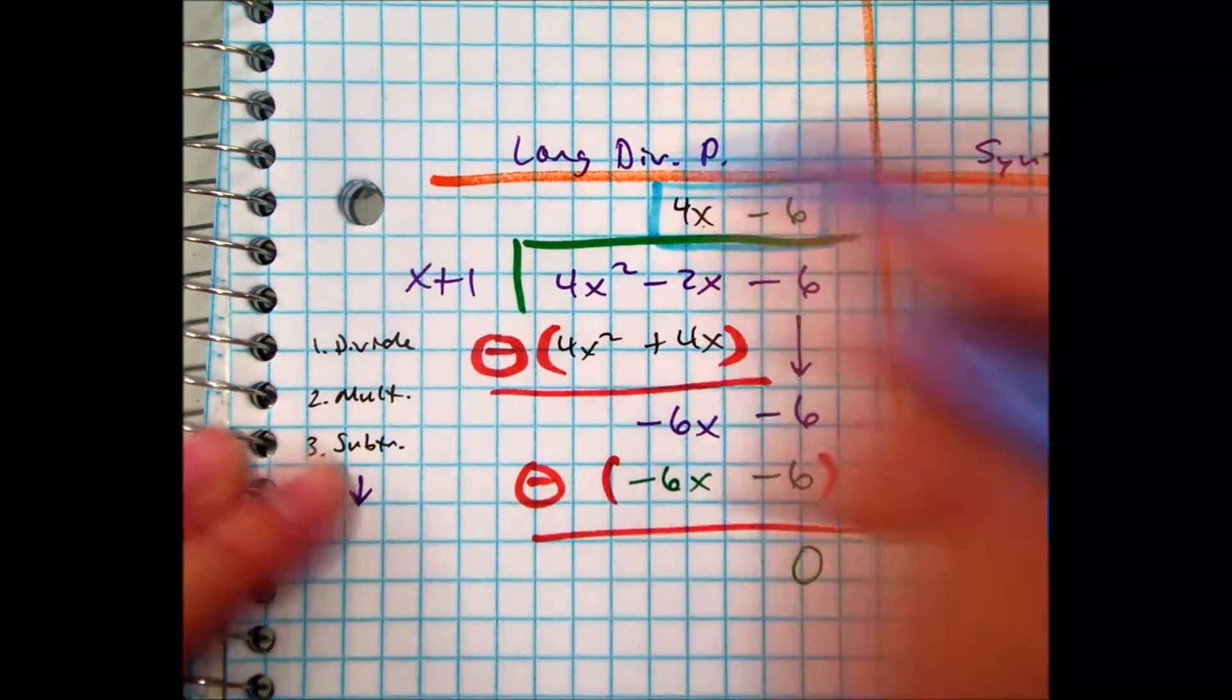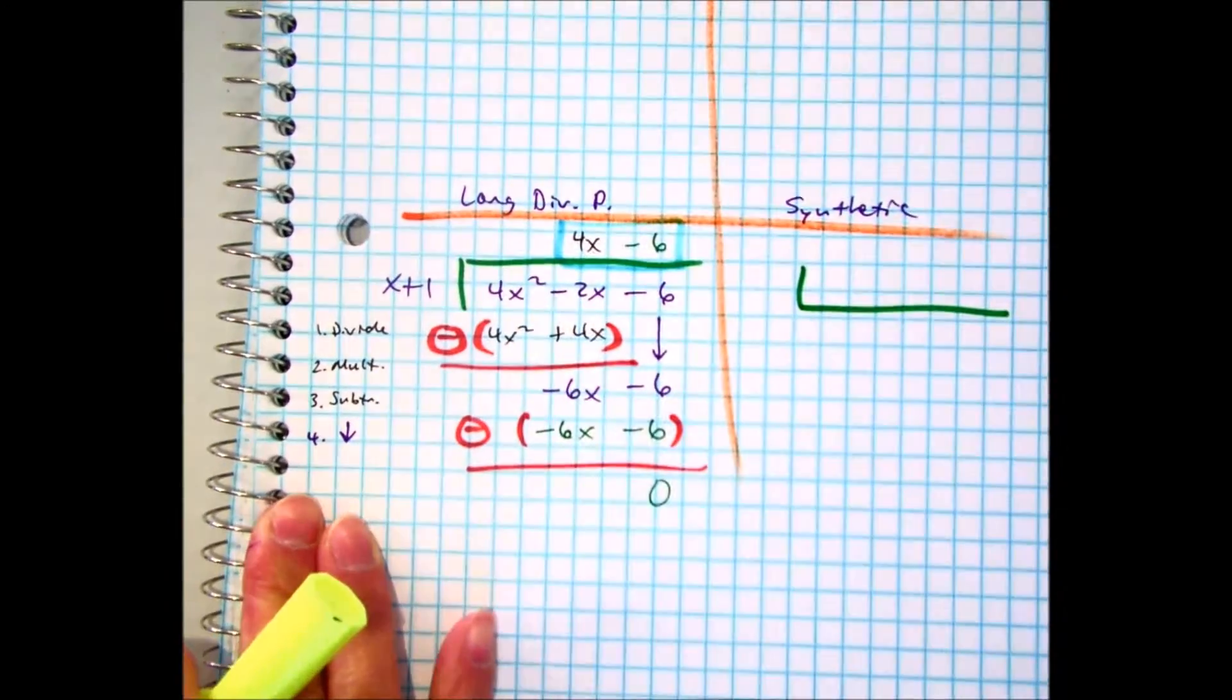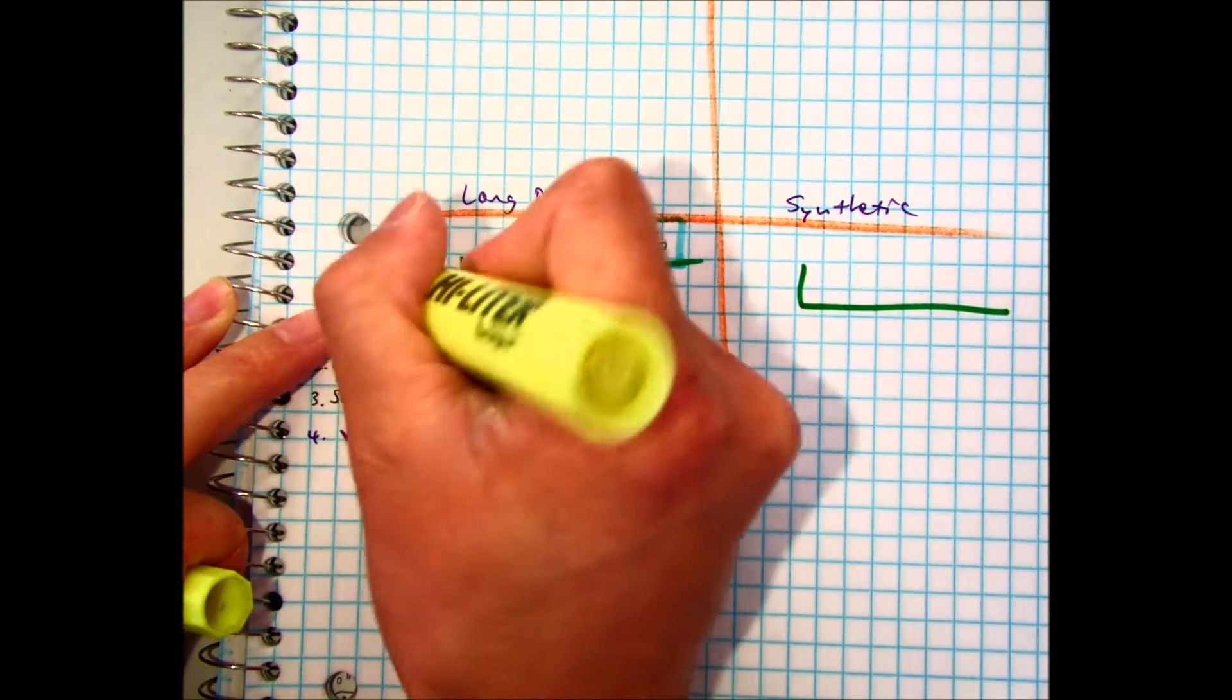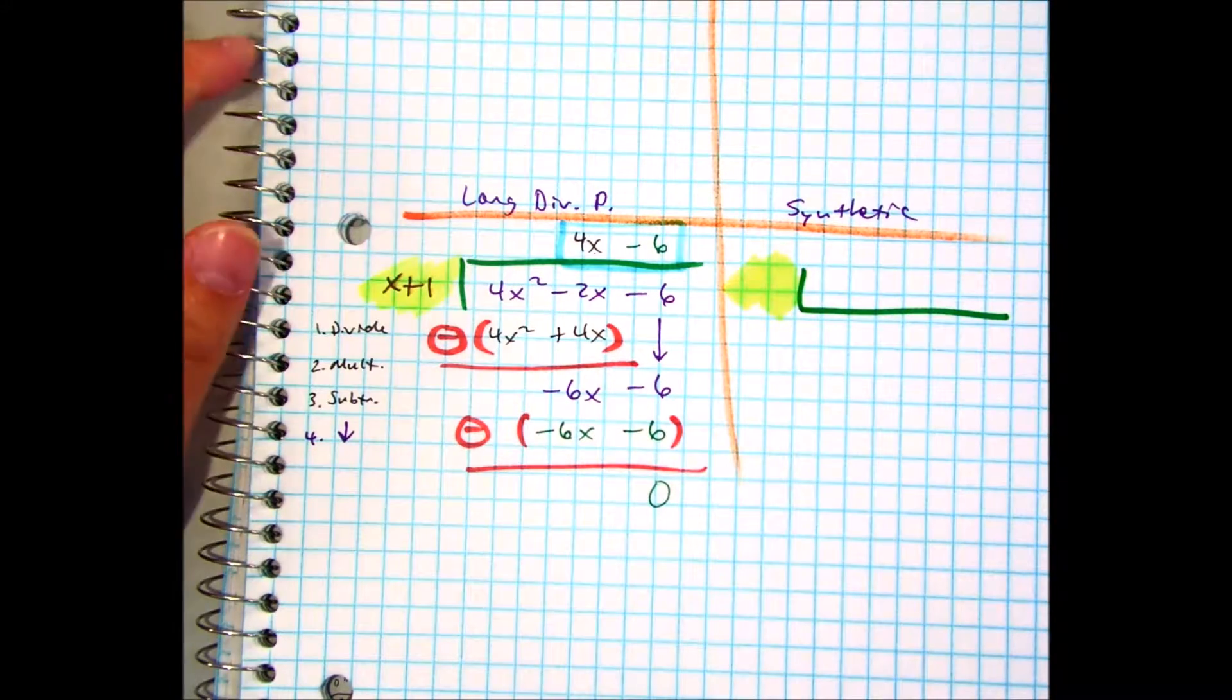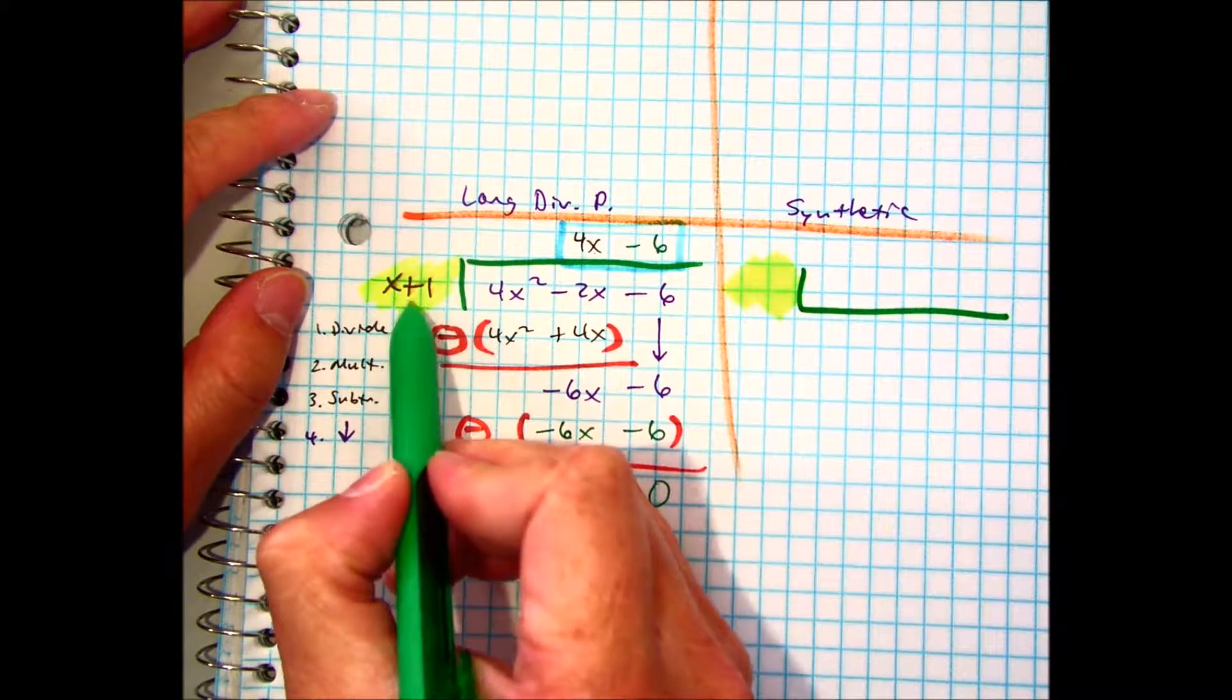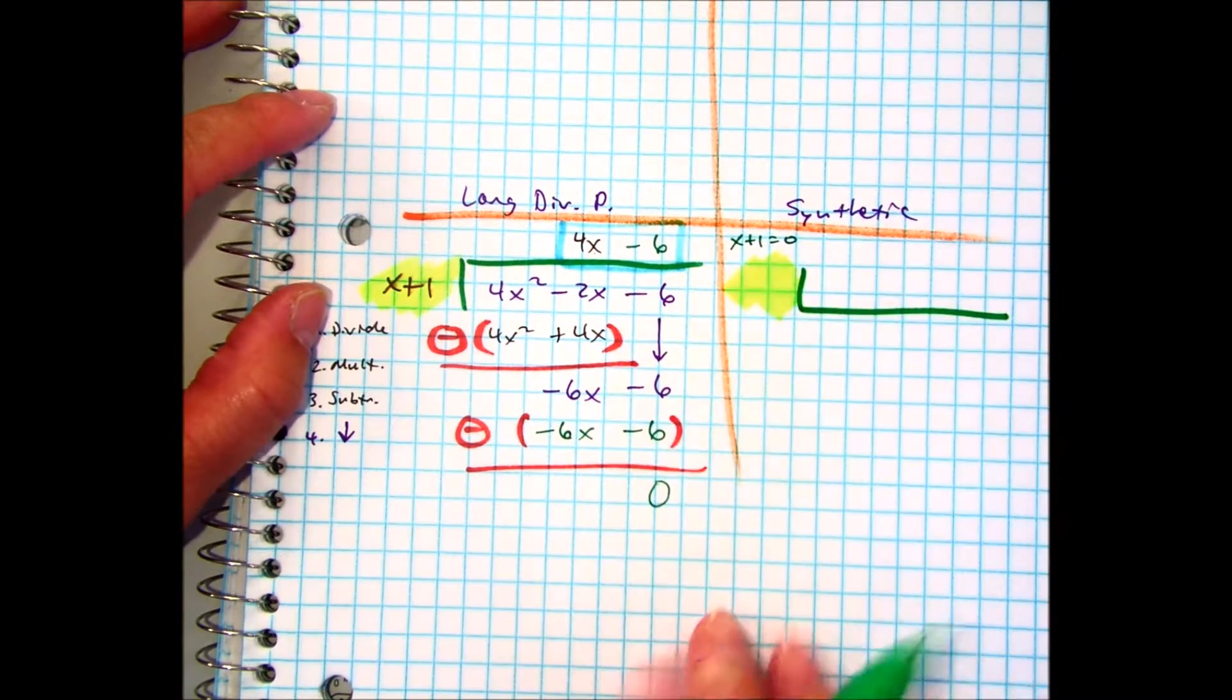Alright, so let's make a parallel or a connection to synthetic division. Synthetic division, I'm going to take this one right here, nice and yellow. Great, smeared it. And the difference here is you're going to set that equal to 0. x plus 1 is equal to 0, therefore x is equal to what class?